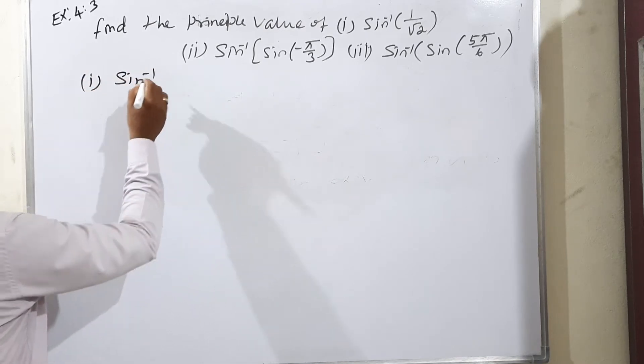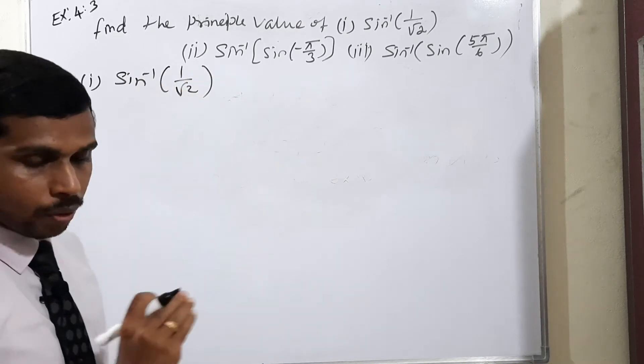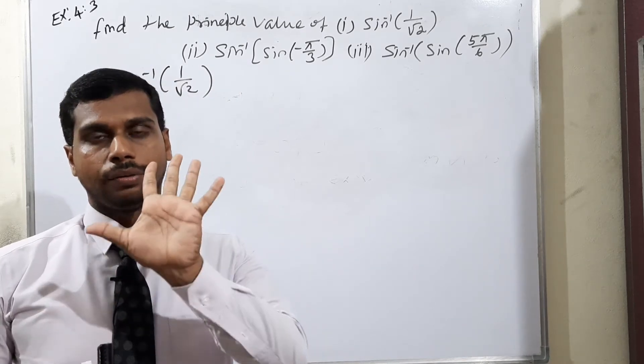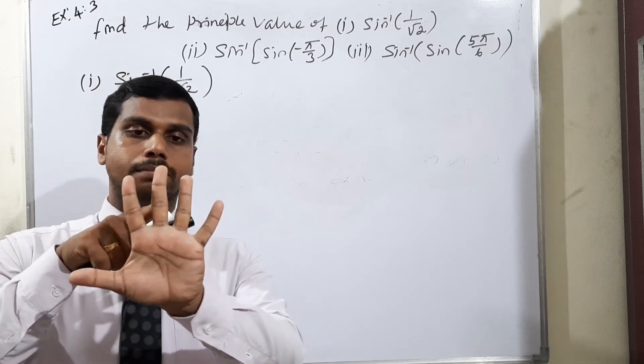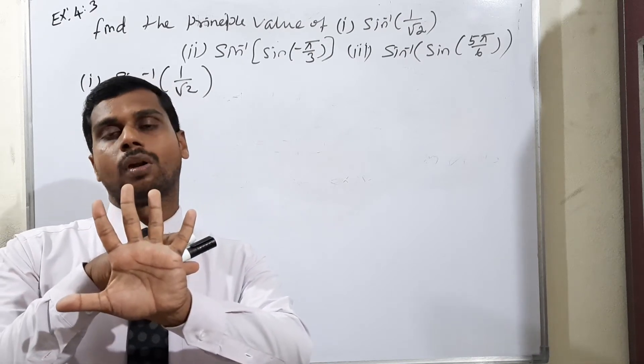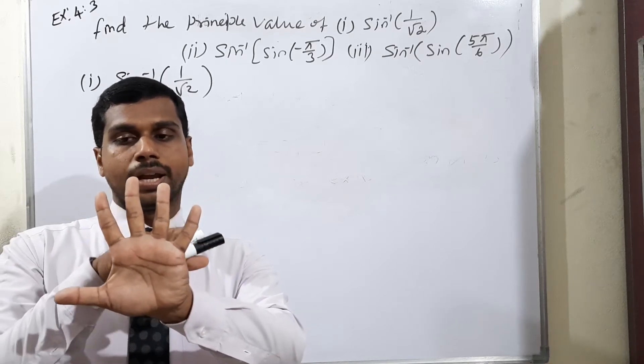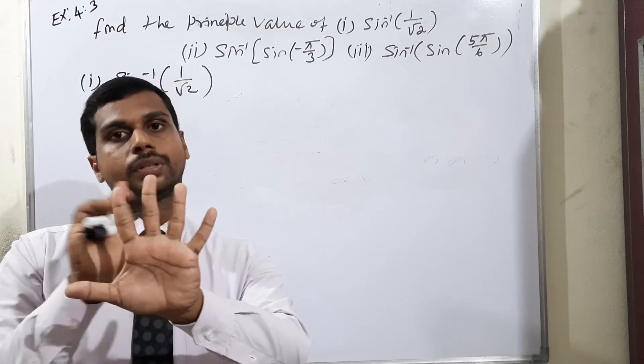Question: sin inverse of 1 by root 2. So everyone has a truth table. What is the meaning? This is thumb, index, middle, ring and small or little finger. This is considered for 30, 45, 60, 90. Radians means 0, π/6, π/4, π/3, π/2. That is all.